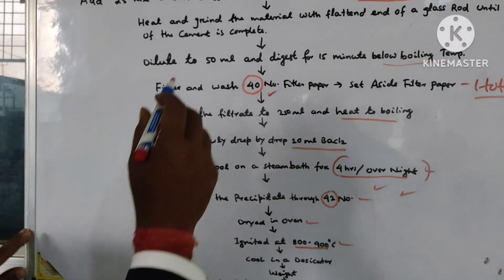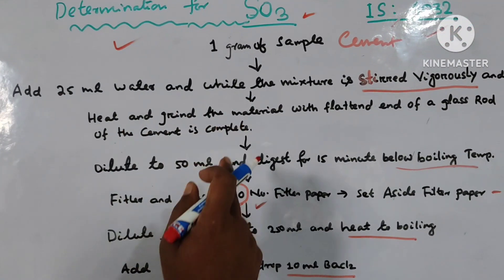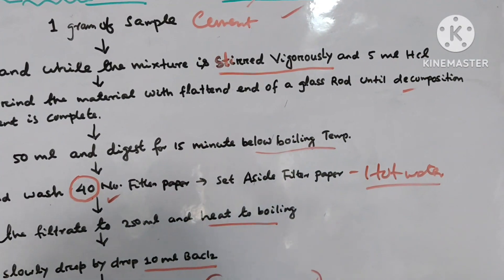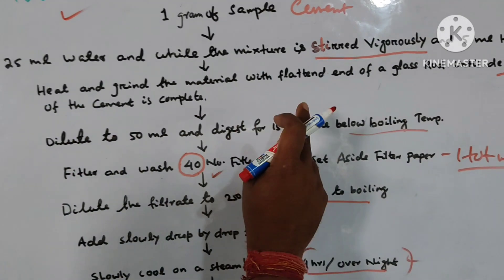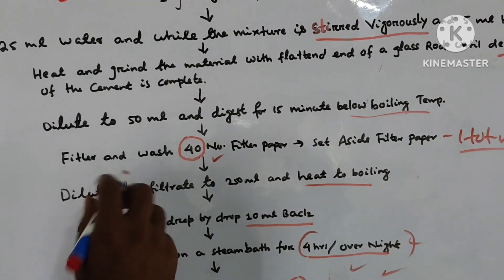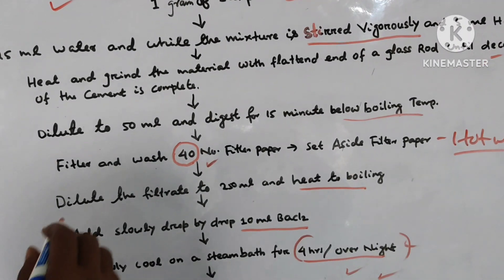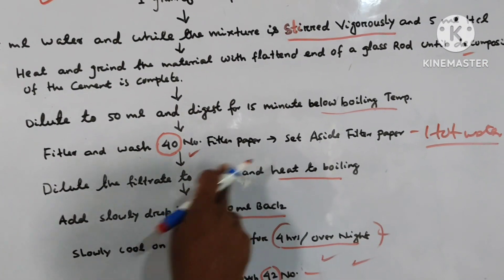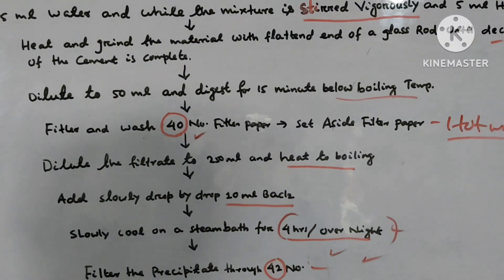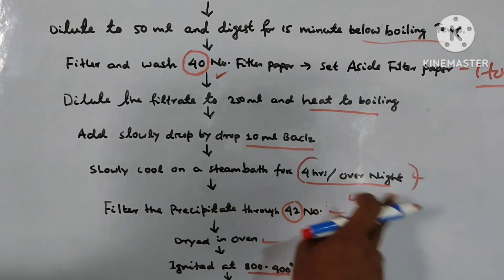Once again repeating the full procedure: take one gram sample of cement, add 20 ml of water, and while the mixture is stirred vigorously add 5 ml of HCl. Heat and grind with a glass rod until decomposition is complete. Dilute to 50 ml and digest for 15 minutes below boiling temperature. Filter and wash with No. 40 filter paper. Dilute the filtrate to 250 ml and heat to boiling. Then slowly add drop by drop 10 ml of barium chloride. Cool on a steam bath for 4 hours or overnight — overnight is best.